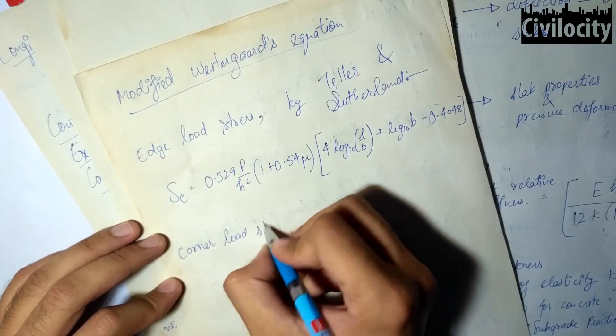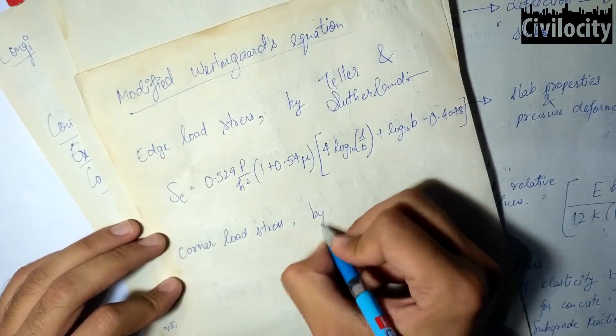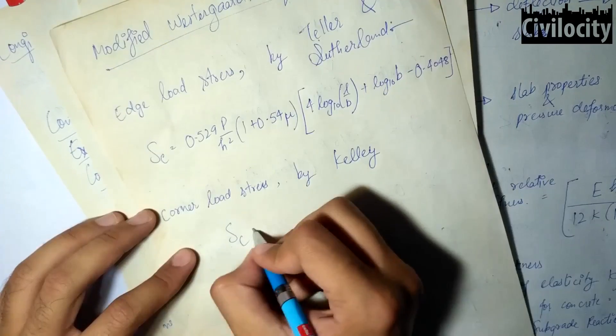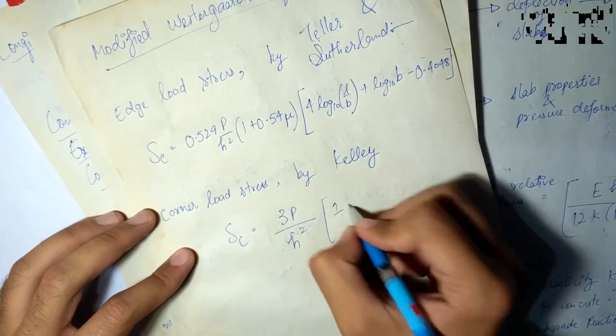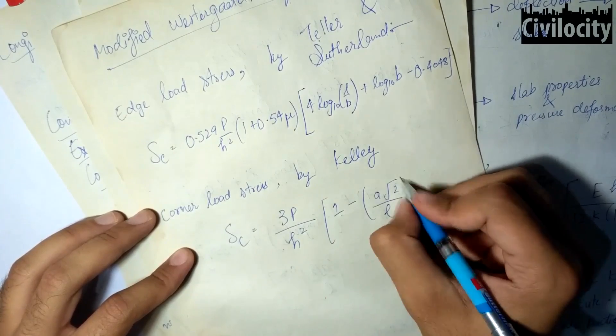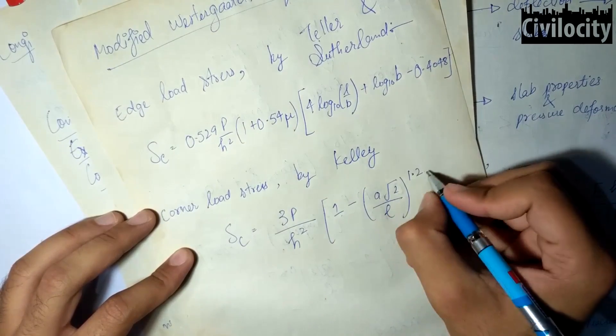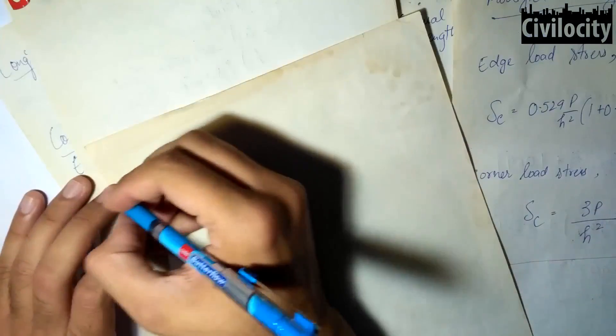His corner loading stress equation was modified by Kelly, which equals Sc equals 3p by h squared times 1 minus A root 2 divided by L raised to the power 1.2.